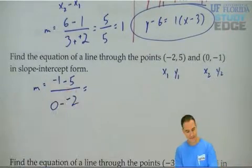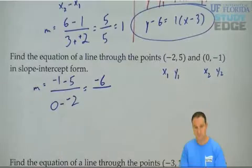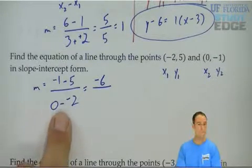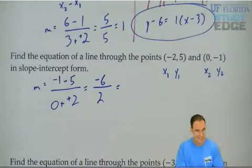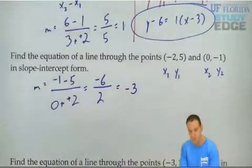Negative 1 minus 5 will give you negative 6. 0 minus negative 2 is really 0 plus 2. Negative 6 divided by 2 will give you negative 3 for the slope.